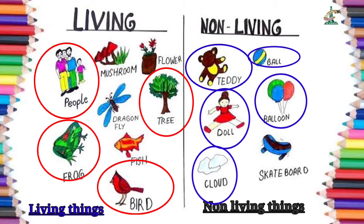اور non-living things تمام ان چیزوں کو کہا جاتا ہے جو کہ سانس بھی نہیں لیتی، کھانا بھی نہیں کھاتی، move بھی نہیں کرتی، اور reproduce بھی نہیں کرتی — اپنے number کو بھی double نہیں کرتی۔ جیسے کہ for example, ball, fan, shoes — these are non-living things.